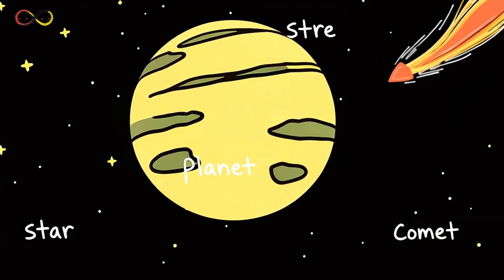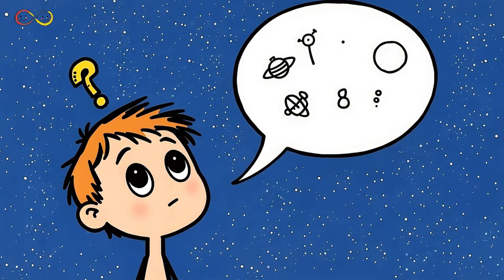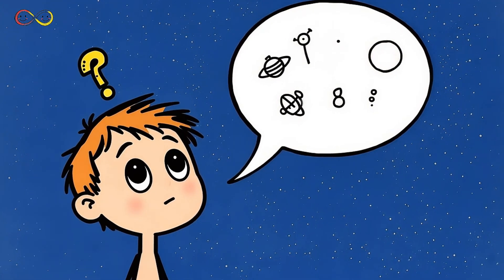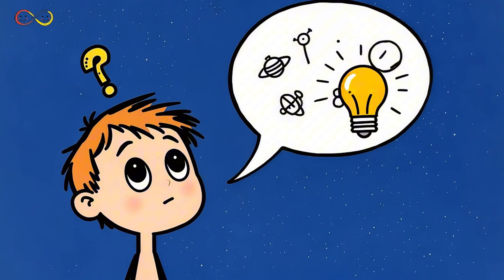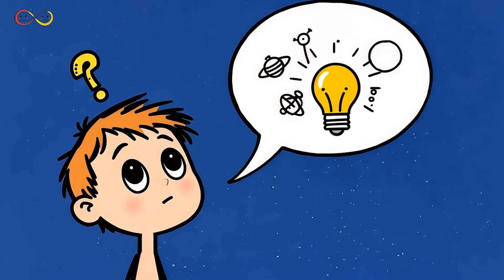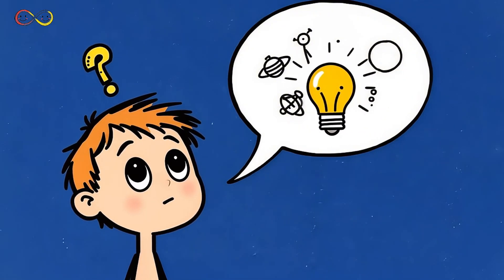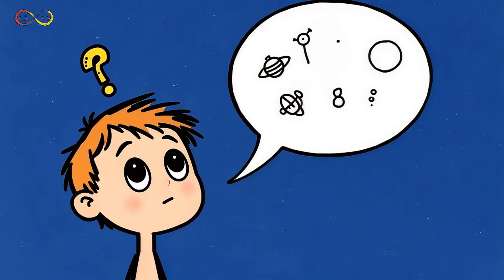So what exactly are these glowing wonders? Scientists call them celestial bodies, a fancy name for anything floating in space. That includes stars, planets, moons, asteroids, and even tiny specks of space dust. Every single one of them has a story. And today, we're going to uncover the mystery behind celestial bodies.